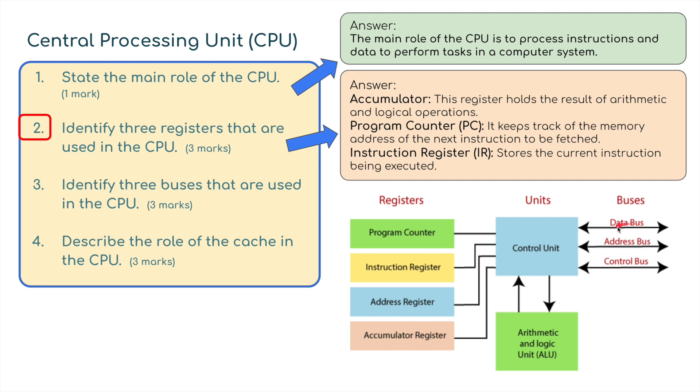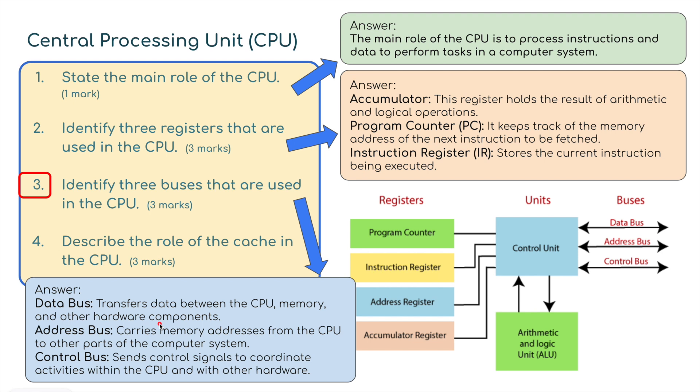Identify three buses. Data bus, address bus and control bus. The data bus transfers data between the CPU and memory and other hardware components. The address bus carries memory addresses from the CPU to other parts of the computer system. The control bus sends control signals to coordinate activities within the CPU and with other hardware.